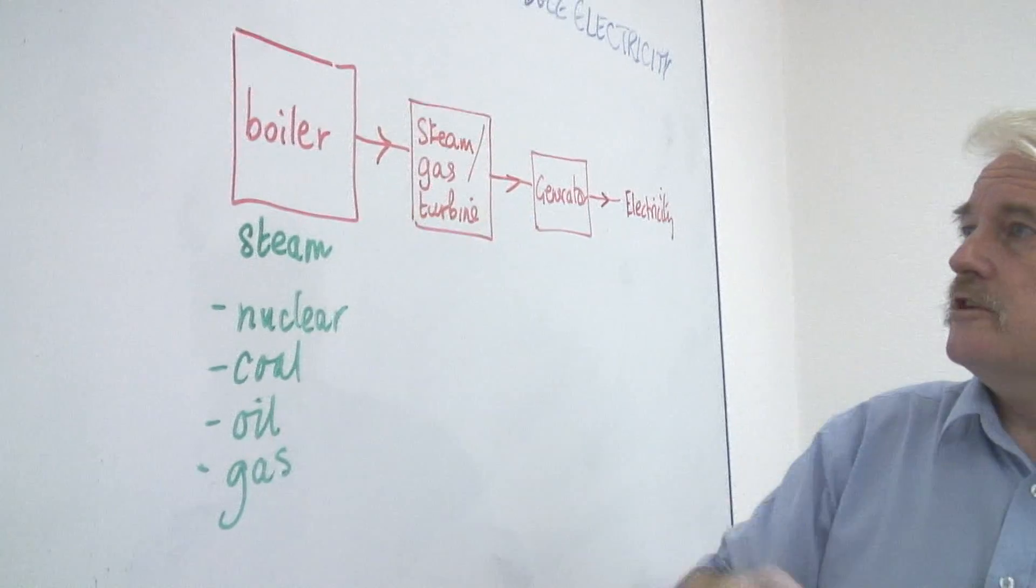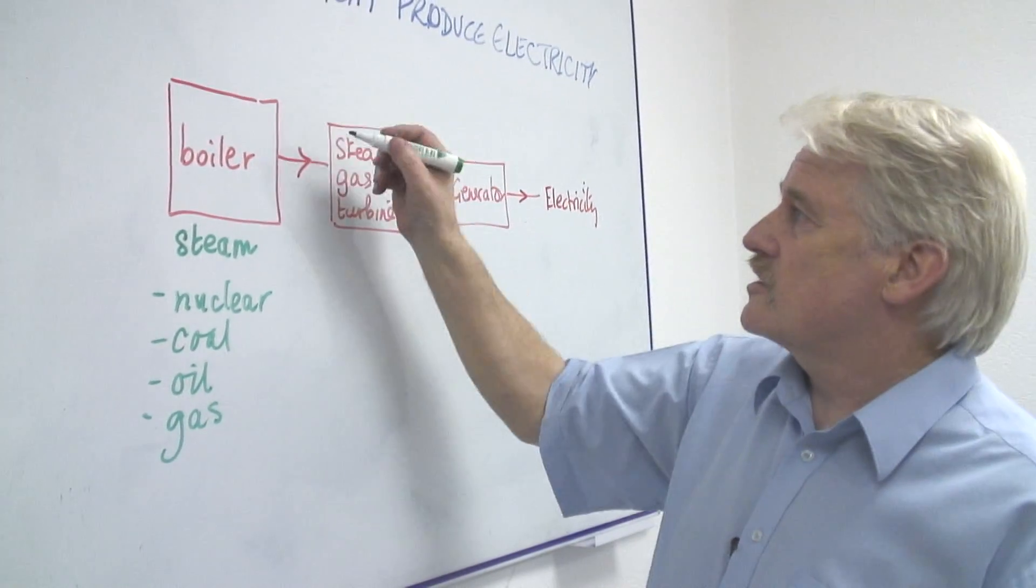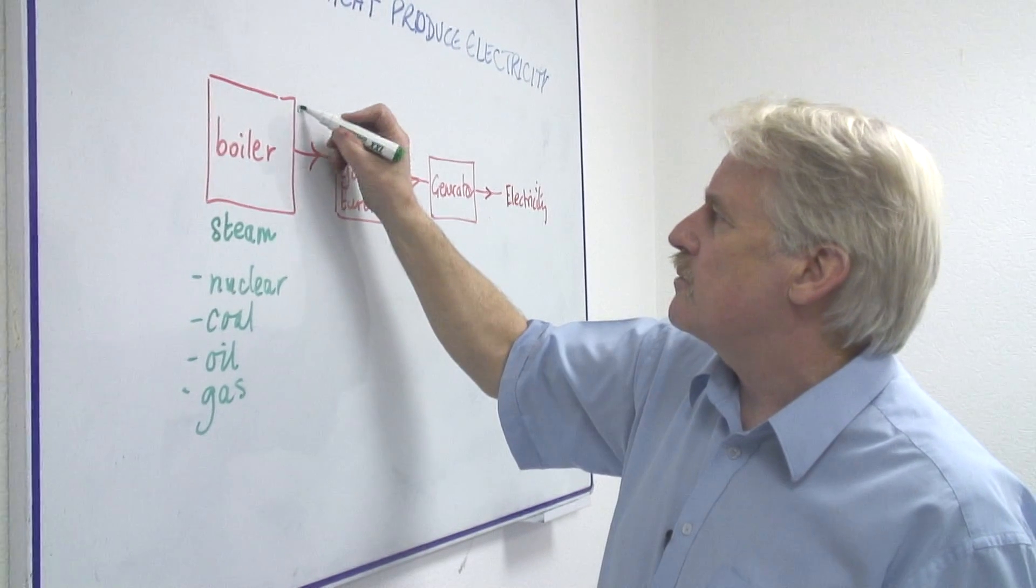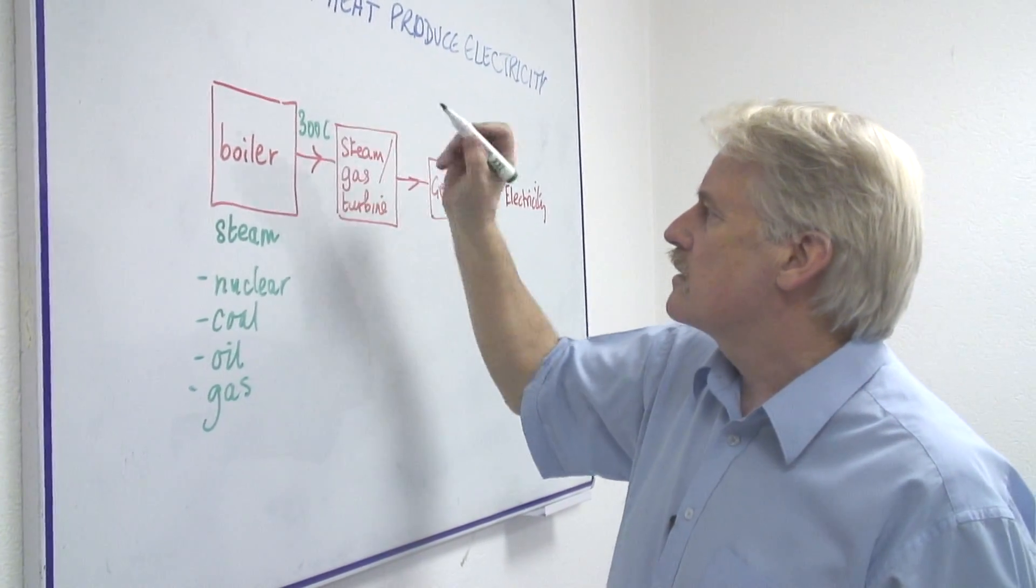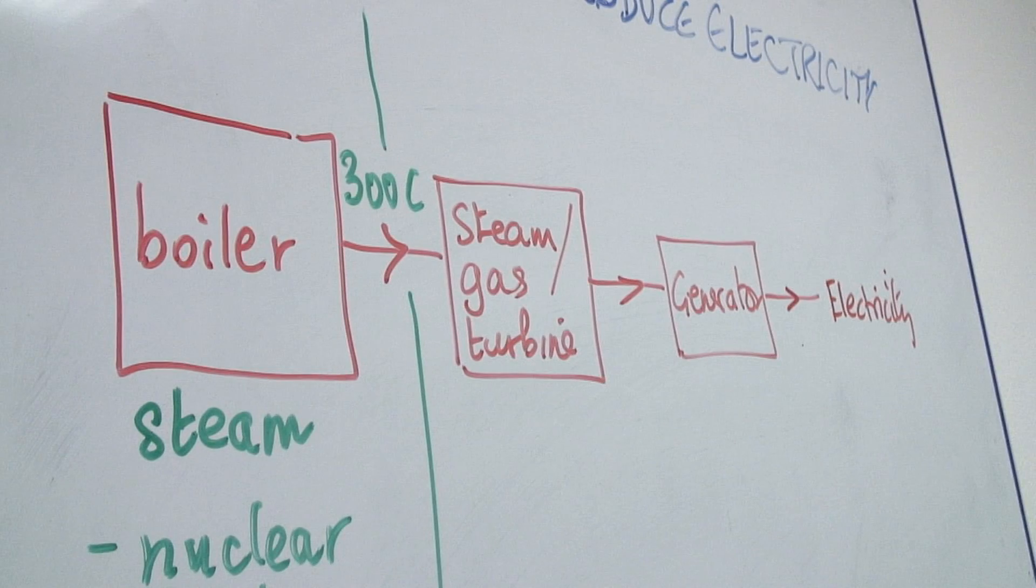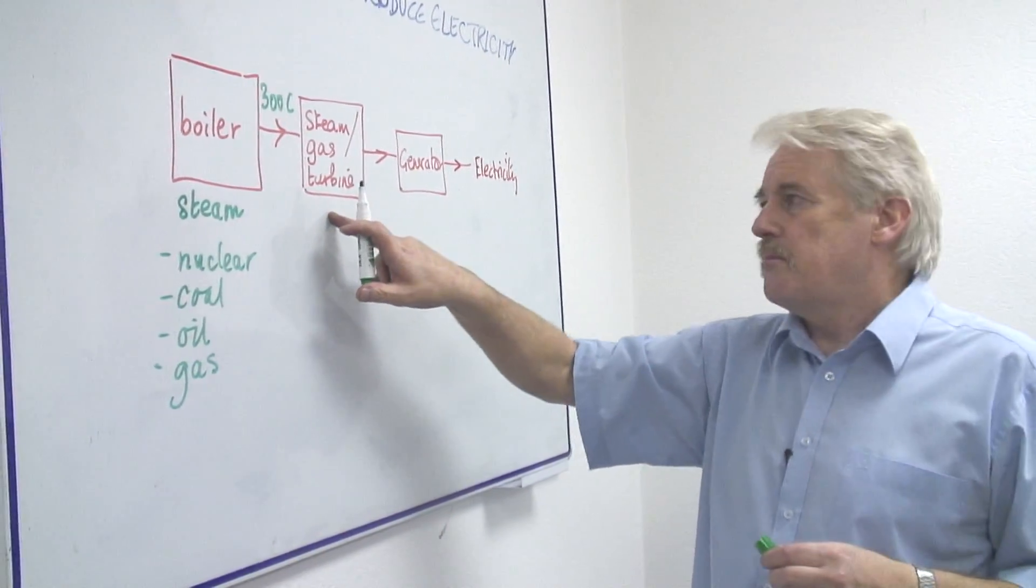From this stage, the boiler producing the steam at a very high temperature, usually maybe about 300 Celsius. The steam goes into what's called a turbine, which is like a large propeller.